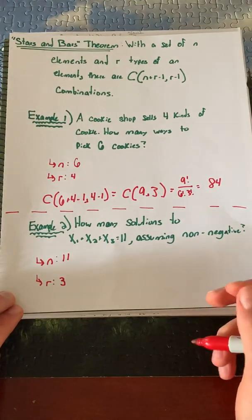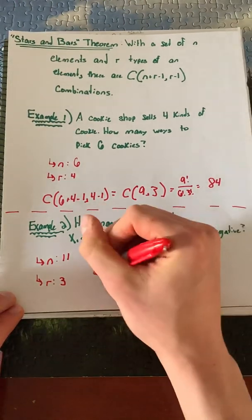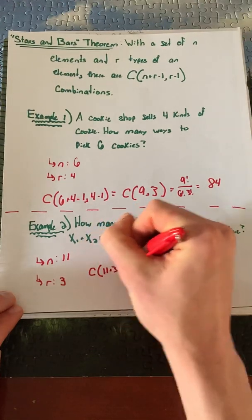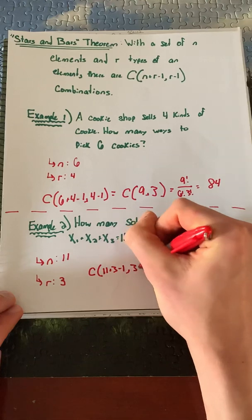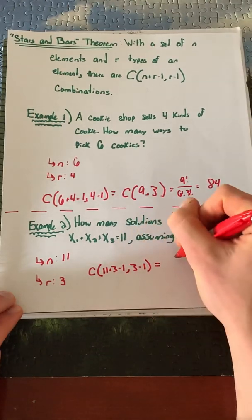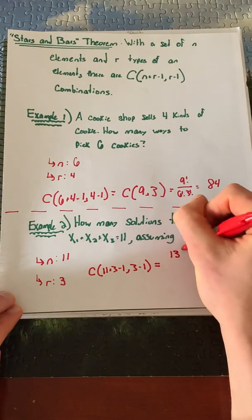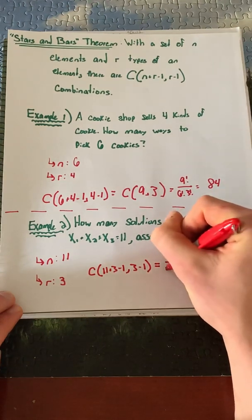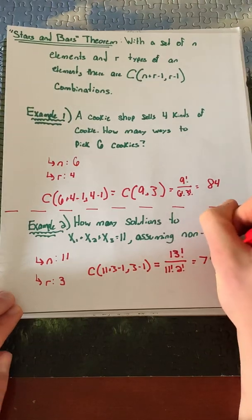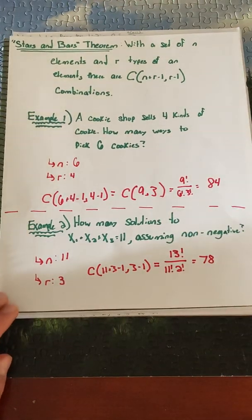Using our stars and bars theorem, we have C(11+3-1, 3-1) different ways to solve this, which gives us 13!/(11!×2!), which is 78 different solutions.